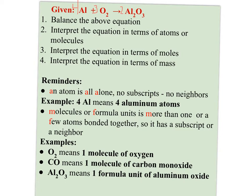It says interpret the equation in terms of atoms or molecules. A few reminders: an atom is all alone — no subscripts, no neighbors. When I look at this balanced equation, aluminum exists as just an atom, which is true of metals. Molecules or formula units are compounds — covalent things are called molecules, and ionic compounds are called formula units. O2 is considered a molecule, and Al2O3 is a formula unit. So I would say: four atoms of aluminum react with three molecules of oxygen to produce two molecules of aluminum oxide.